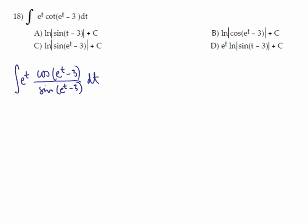And to help us not have to use substitution twice, we want to use the denominator as our u. And we know that the derivative of sine of e to the t minus 3 is going to be cosine e to the t minus 3, and then because of the chain rule, times e to the t. Let's see how it works.